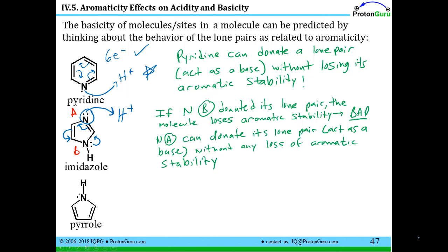So we can identify the site on the ring that's more basic. Just to summarize, if nitrogen B was to donate its lone pair to an acid, the molecule would lose its aromatic stability. That's very bad in terms of stability and favorability of the reaction. But nitrogen A can donate its lone pair with no problem. Nitrogen A can act as a base without any loss of aromatic stability for the compound. So imidazole as a whole molecule can act as a base, and it's that particular nitrogen that is the basic site on the molecule.